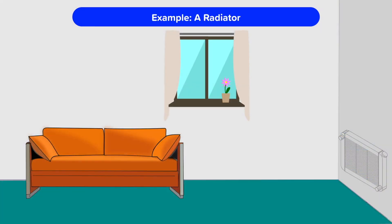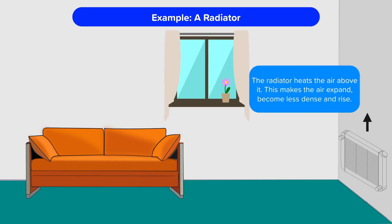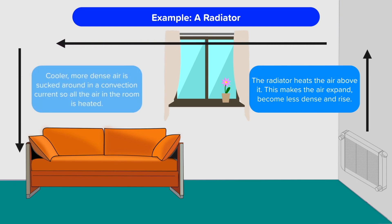Let's look at some examples in everyday life. A radiator uses convection to heat a room. The radiator heats the air above it and this makes the air expand, become less dense and rise. The cooler more dense air on the other side of the room is sucked around in a convection current to be heated. So eventually, all the air in the room cycles around and all the air is heated.